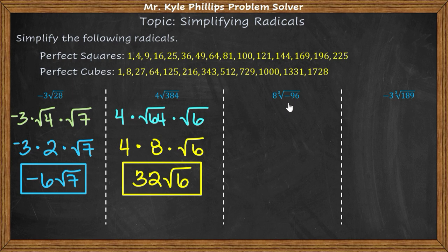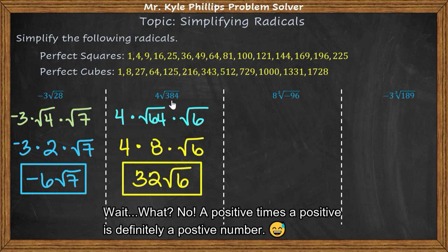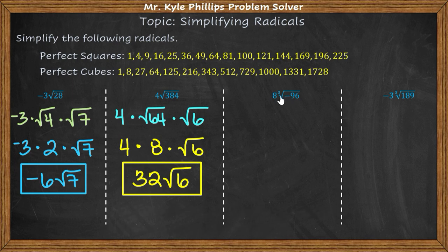Now let's work with cube roots. Don't let negatives bother you — with square roots you can't take the square root of a negative number, but you can take the cube root of a negative. The reason is you can't find two identical numbers that multiply to a negative, since a negative times a negative is positive and a positive times a positive is also positive. But with cube roots, negative 2 times negative 2 times negative 2 equals negative 8, so the cube root of negative 8 is negative 2.